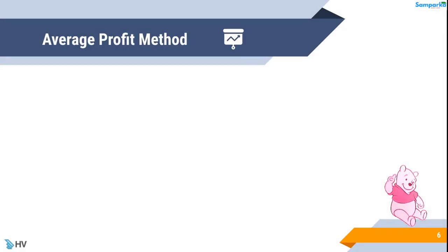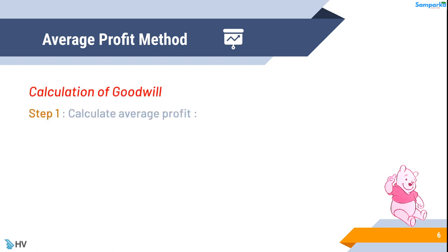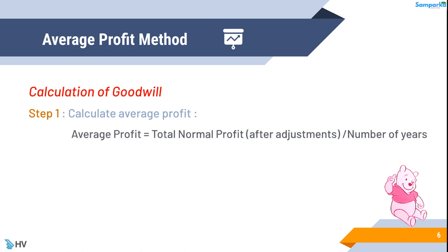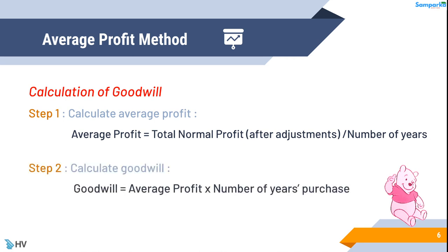Average profit method: calculation of goodwill. Step 1 — calculate average profit. Average profit equals total normal profit after adjustments divided by number of years. Step 2 — calculate goodwill. Goodwill equals average profit multiplied by number of years of purchase.